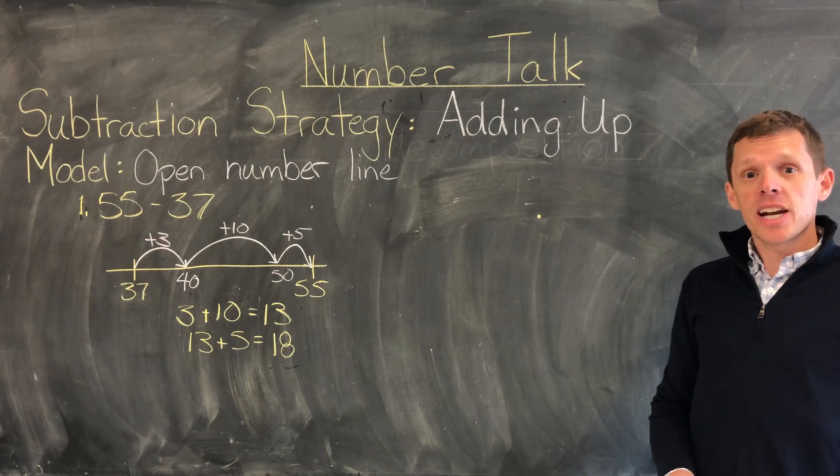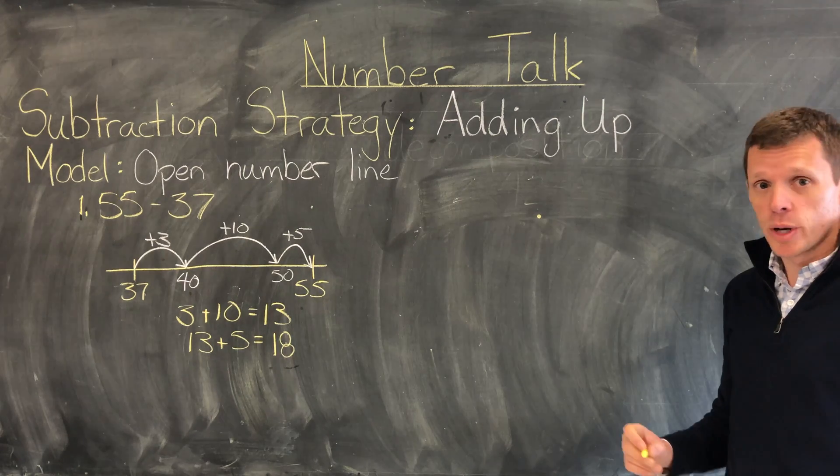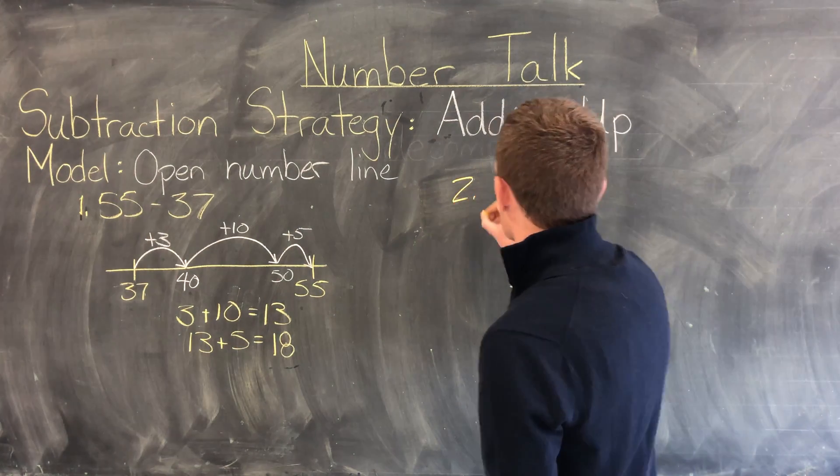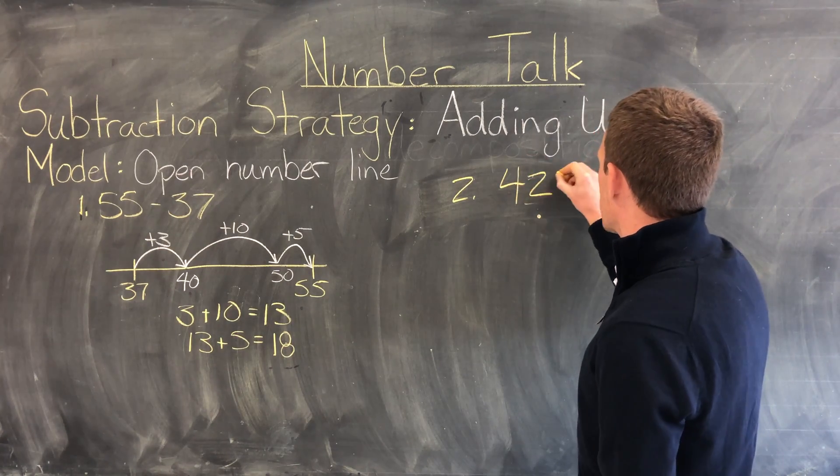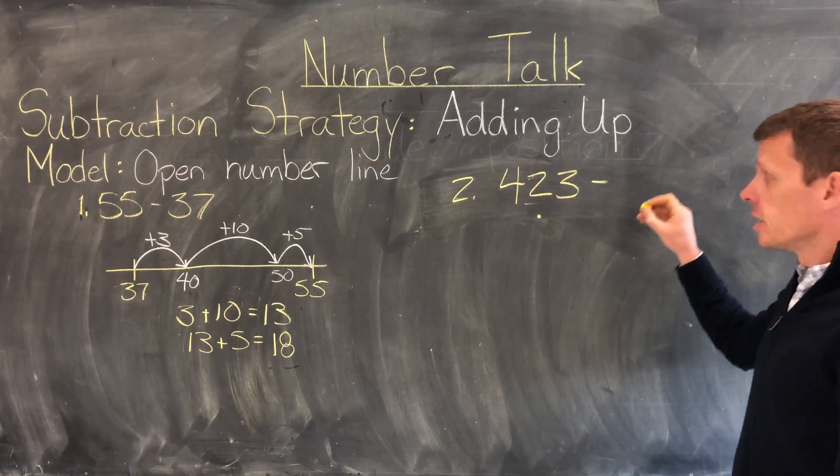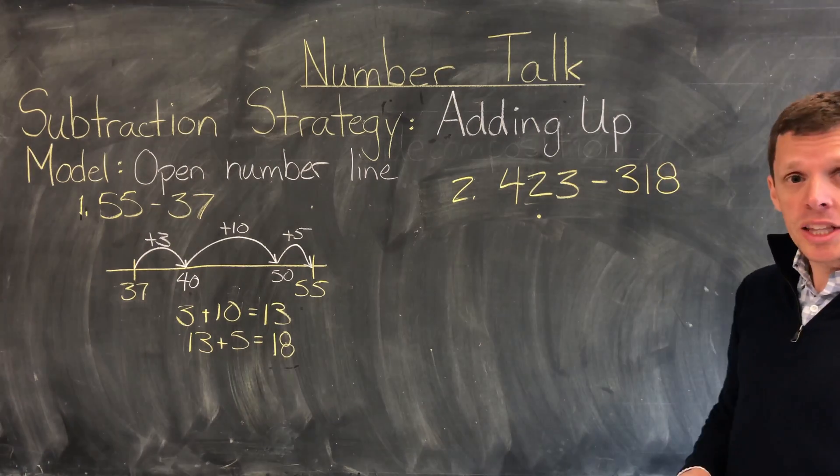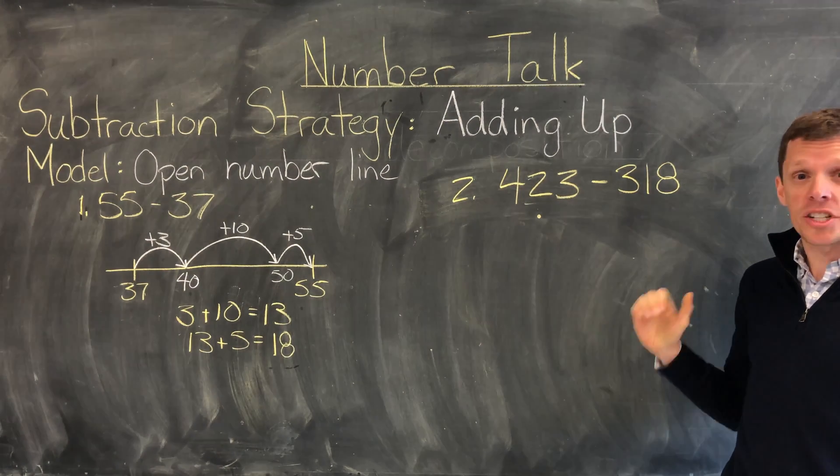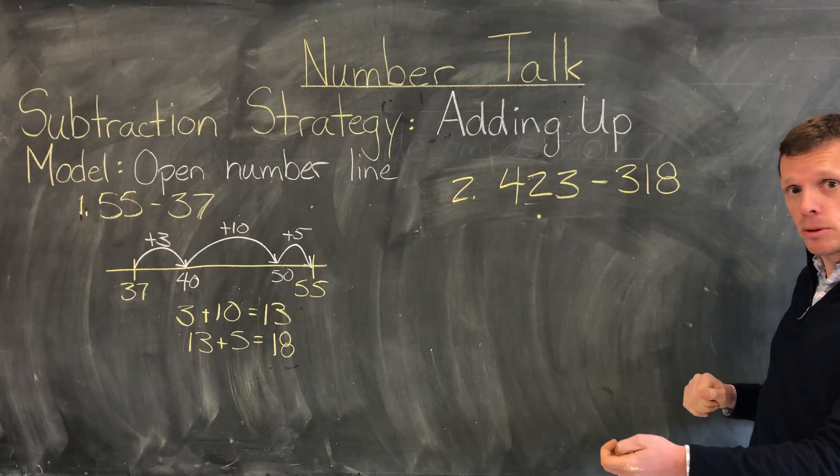For our second and final example, let's subtract 318 from 423. So I'm going to write 423 subtract 318. Now don't let these larger numbers confuse you or scare you because we'll do the same thing with setting up a number line, an open number line.